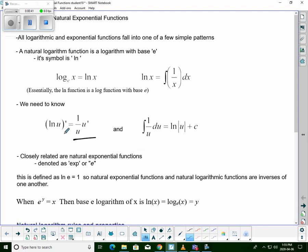So we need to know that ln, the derivative of ln, is 1 over, and then we go inside and take the derivative of u. And the integral of 1 over something du is ln absolute value of u plus c.